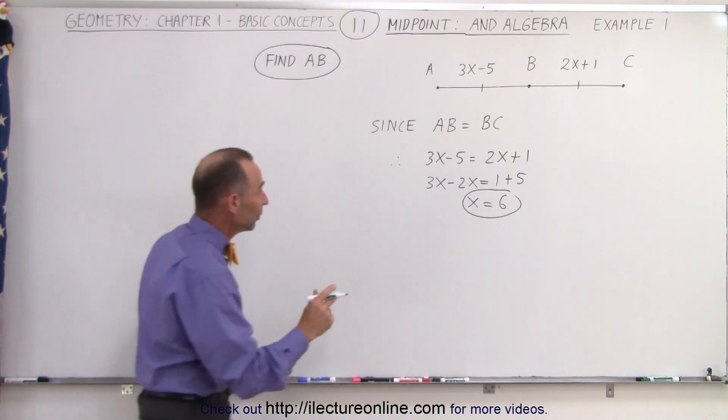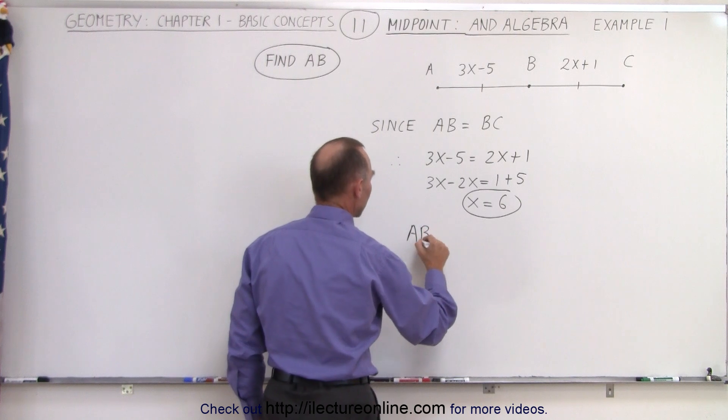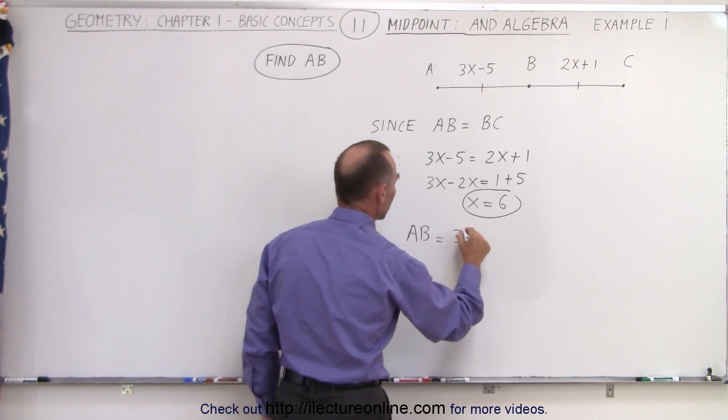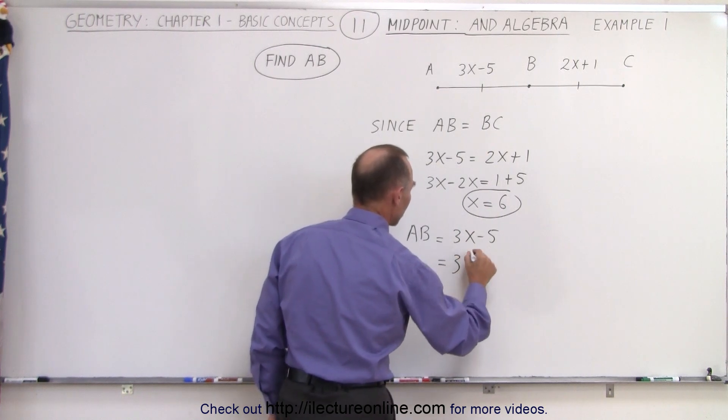Now since we know the length of AB—and this is how we indicate the length of line segment AB—is equal to 3x minus 5, and since x is equal to 6, we can say that 3 times 6